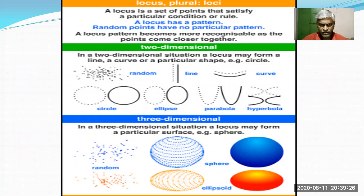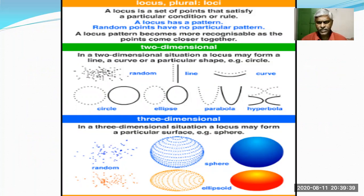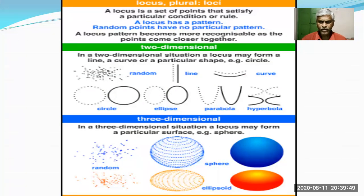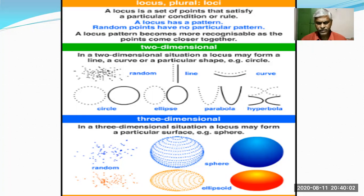Let us take some examples of locus in two dimensions. Locus may be in the form of a line, a curve, or a particular shape. For example, circle is one of the best examples of locus, and ellipse, parabola, hyperbola, or any curve such as sine, cosine. In three dimensions, sphere and ellipsoid are examples of locus.